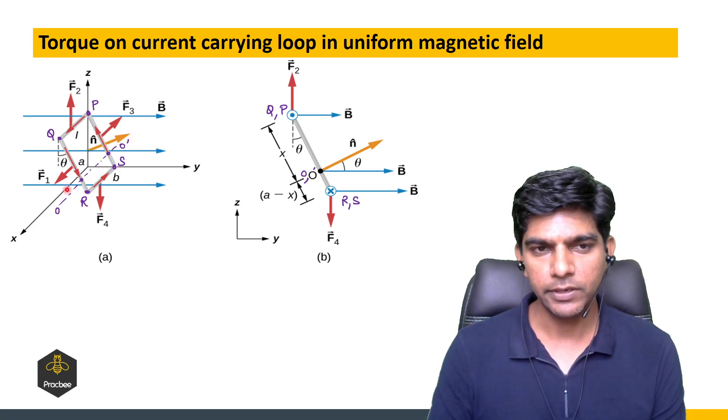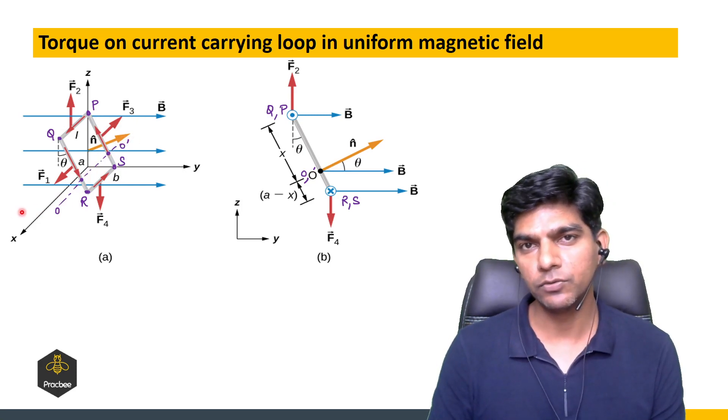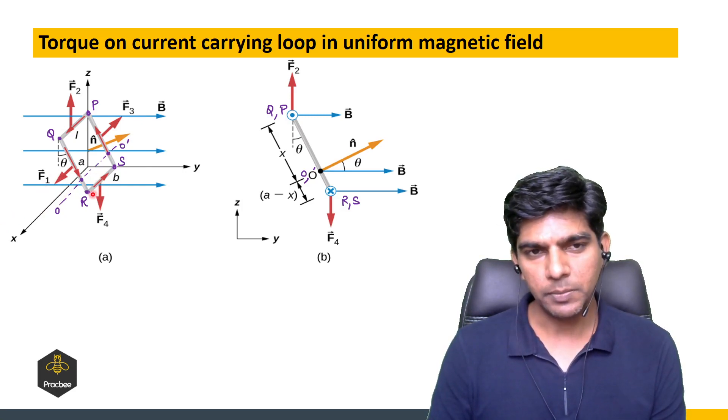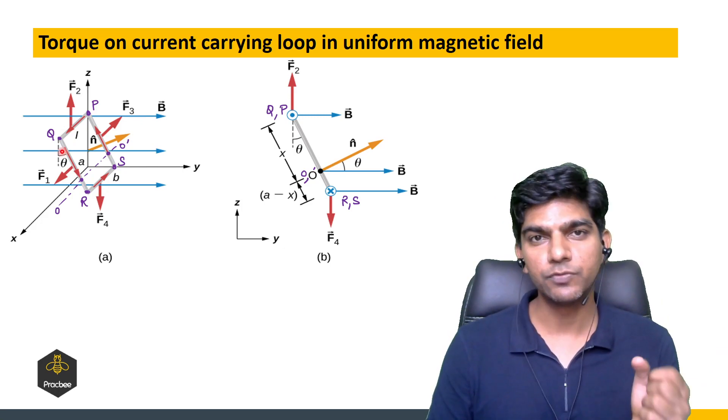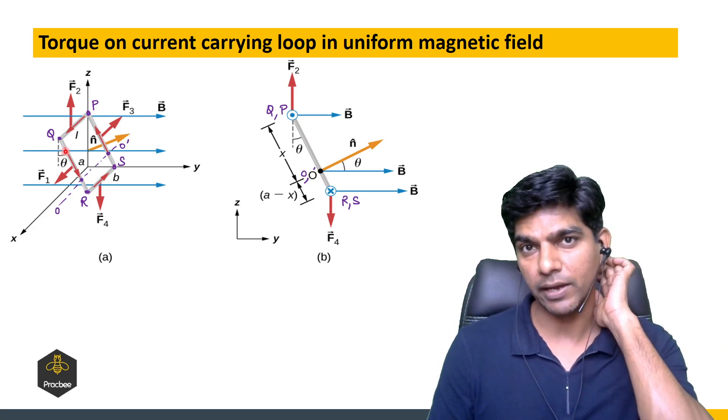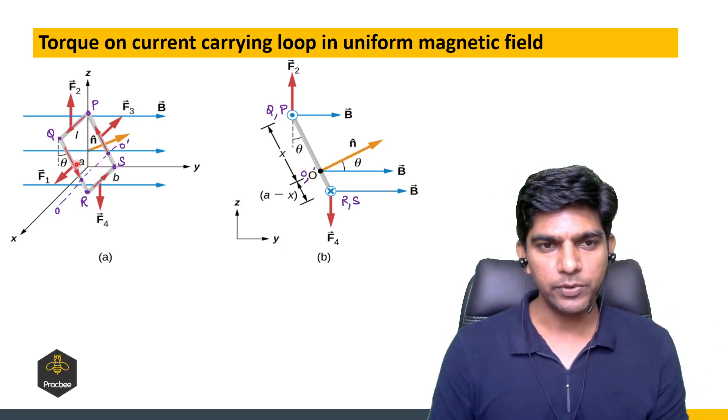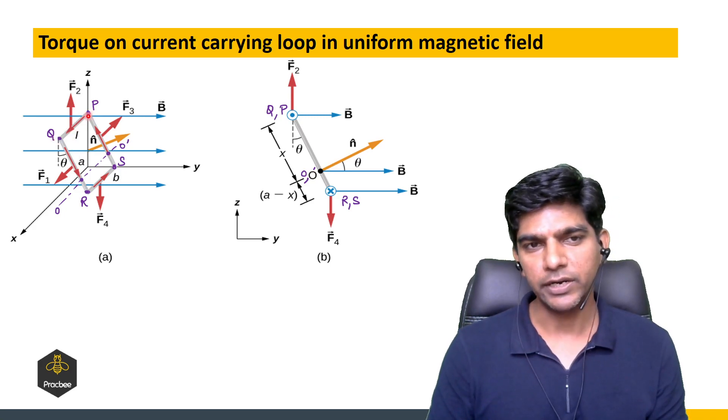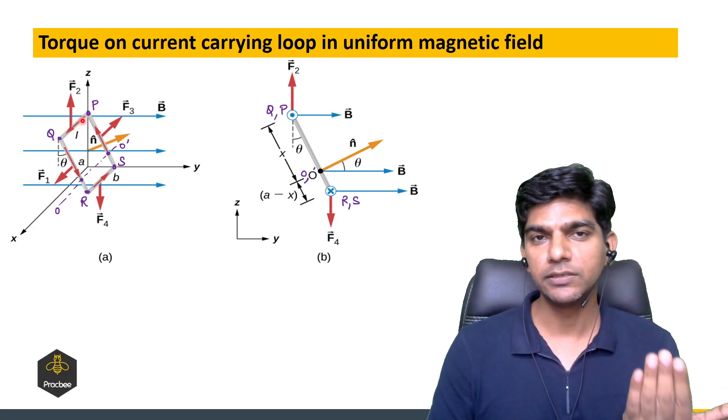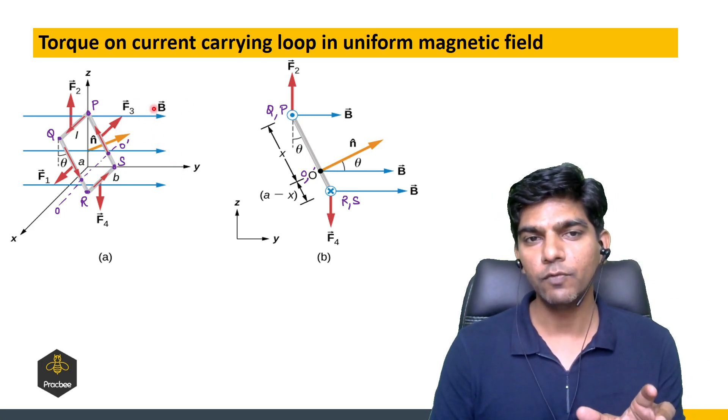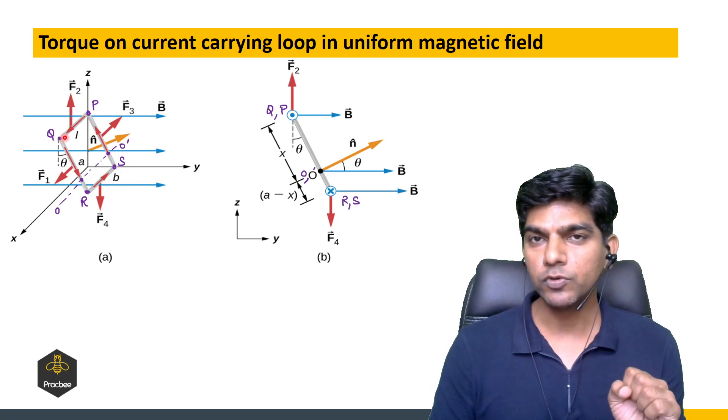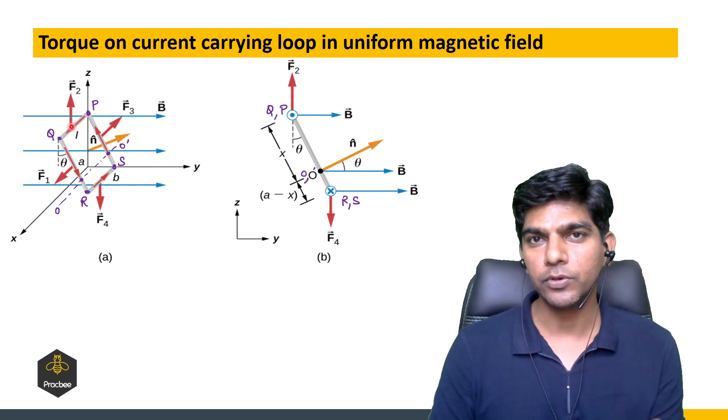Now let us see forces on different sides of this loop, in which direction and what is the magnitude. For example, if we start with PQ, the current is in the x direction and the magnetic field in this region is uniform in the y direction, so the force will be in the positive z direction.